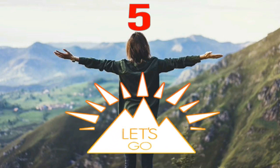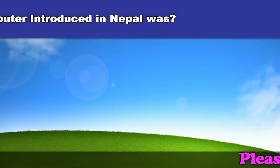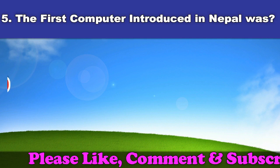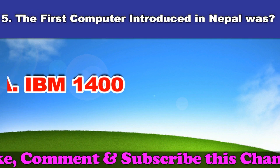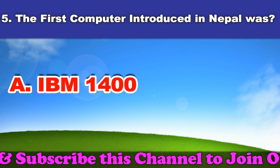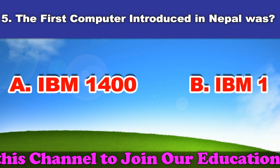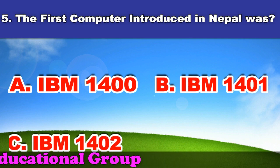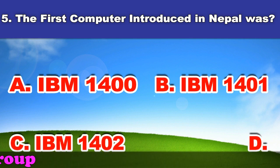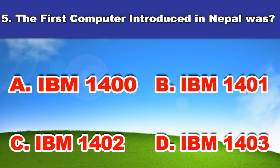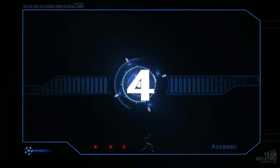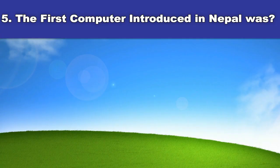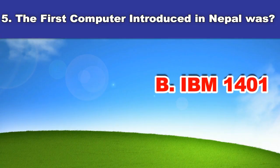Fifth question: The first computer introduced in Nepal was. A. IBM 1400. B. IBM 1401. C. IBM 1402. D. IBM 1402. And the answer is IBM 1401.